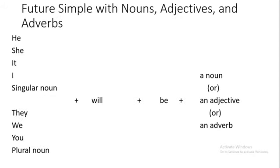We have finished the movement type — القسم الحركي. Now we will move to the non-movement type — القسم غير الحركي — which includes nouns, adjectives, and adverbs. The structure for this section: he, she, it, I, or singular noun, or they, we, you, or plural noun, plus will, plus be, plus either a noun — اسم — or an adjective — صفة — or an adverb — ضرف.